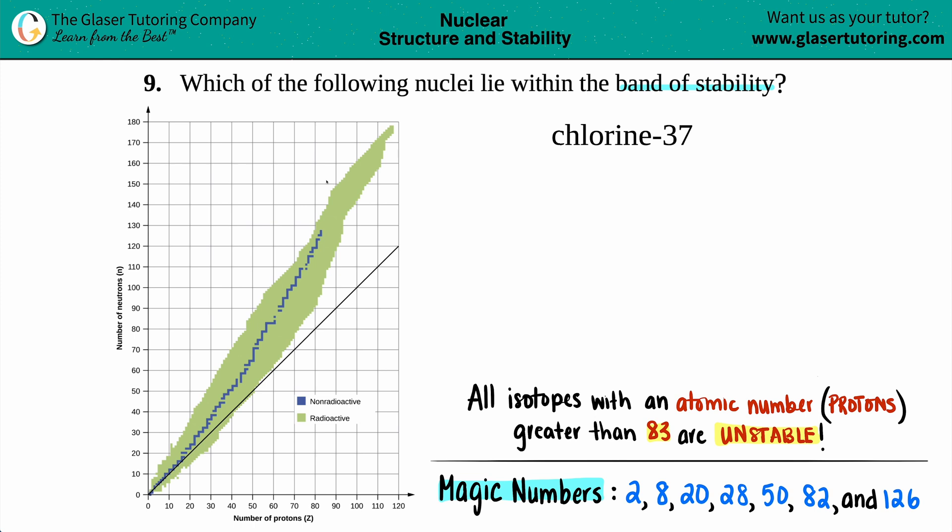The band of stability is the blue line that zigzags all the way up. If you are part of that blue line, you are stable and you are in the band of stability. All of the green is unstable, so you would not be in the band of stability.